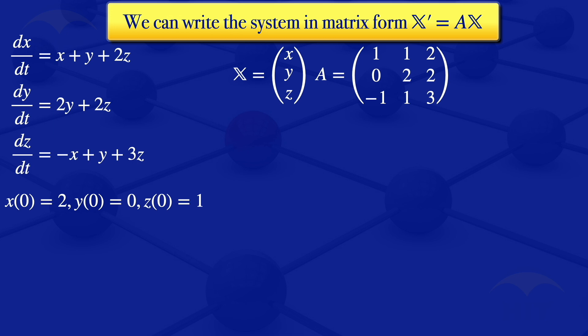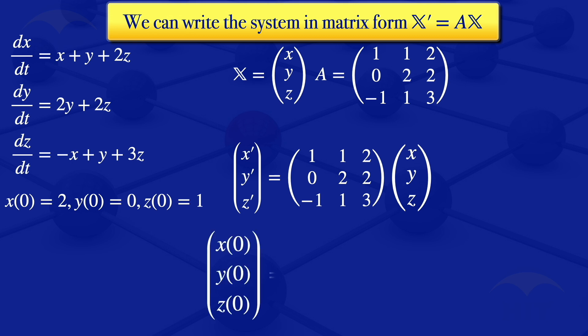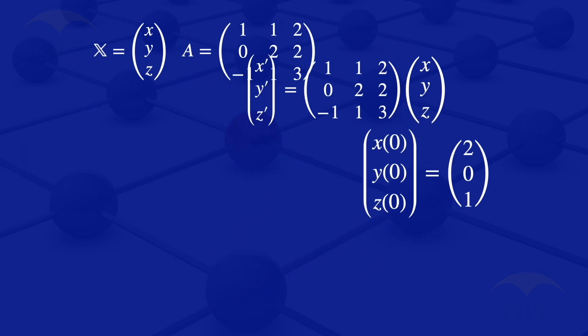Writing our system in this matrix form, we have x prime, y prime, z prime equals the matrix A multiplied by the column vector of dependent variables x, y, and z. For our initial conditions, x(0), y(0), z(0) equals the column vector 2, 0, 1. That's our system in matrix form.